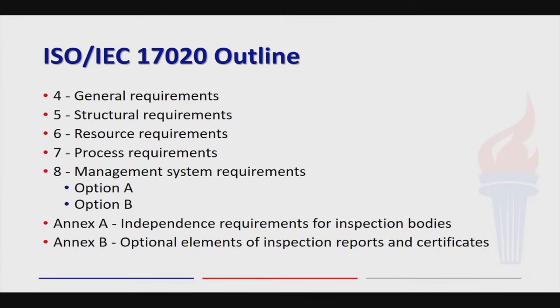The 17020 outline follows the standard ISO 9000 format — hopefully what 17025 will follow when we go through this transition. One of the things you see is Option A and Option B. Option A is if you don't have an ISO 9001 system in place already. Option B is if you've already got an ISO 9001 system in place that you're accredited to — give us some credit for this. As an assessment body, we will still look at all those pieces. If you've got an ISO 9001 registered system, we won't look to the same depth as under Option A.